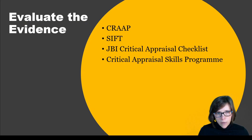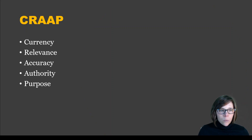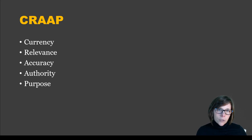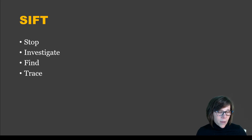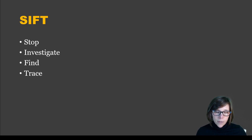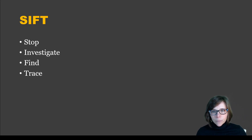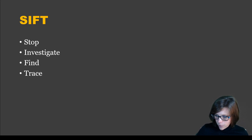The last step is to evaluate the evidence. The CRAAP framework covers currency, relevancy, accuracy, authority, and purpose: how current and relevant is the literature, is it accurate, who's writing it and are they an expert, and what's their motivation? SIFT asks you to stop and investigate before going further — find a better source if that one isn't good — and always trace quotes, context, and media back to the original source. If you find an article that quotes another article, you need to find that original article; you can't quote it from the second one.